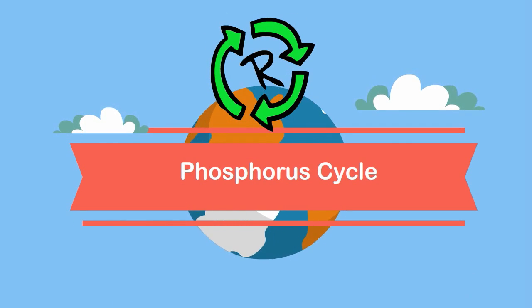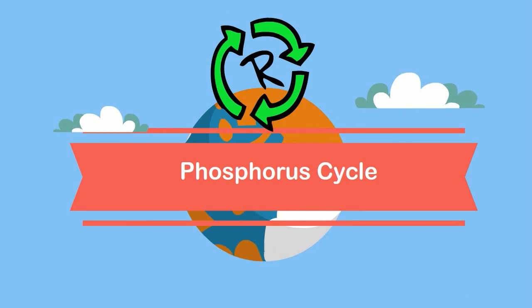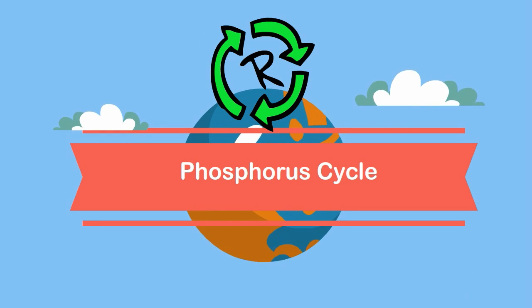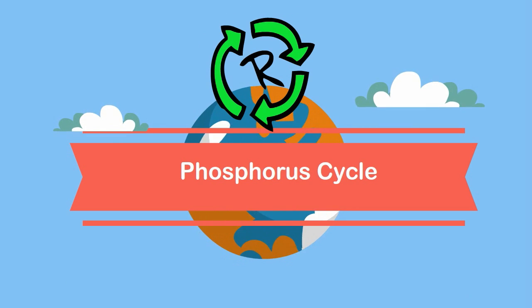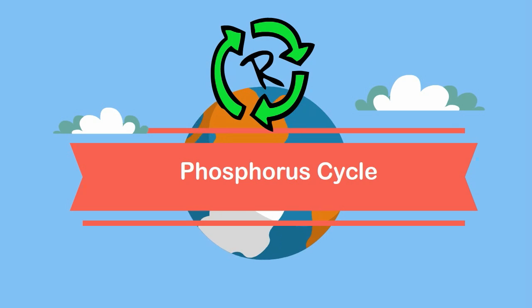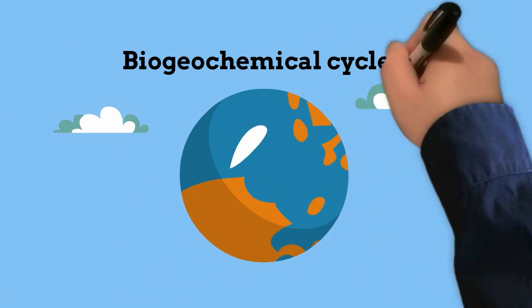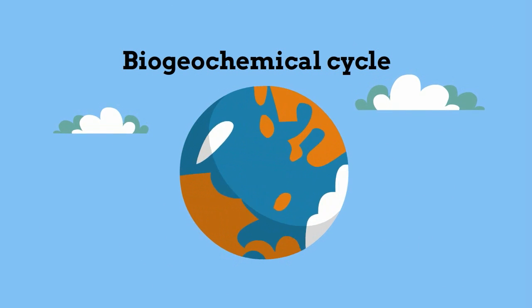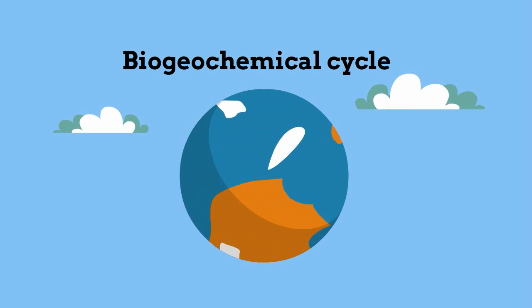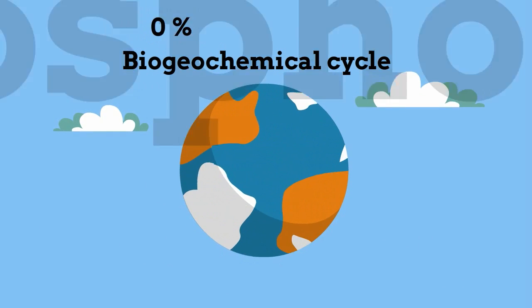Welcome to Moo Moo Math and Science. In this video I would like to talk about the Phosphorus Cycle. Along with water, carbon, and nitrogen, phosphorus also has a biogeochemical cycle. However, it is different in one way: phosphorus is not found in the atmosphere.